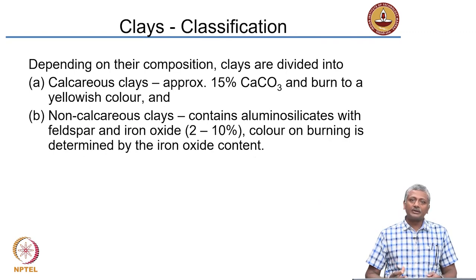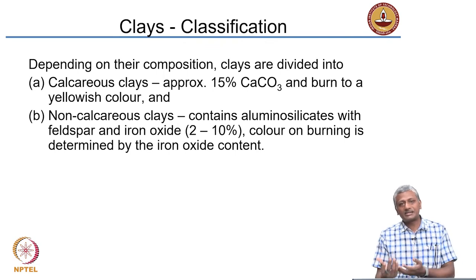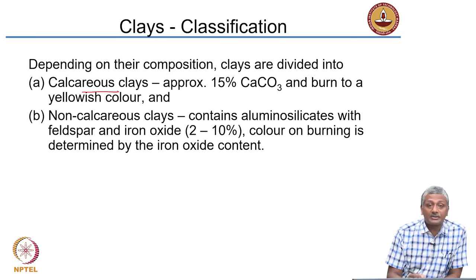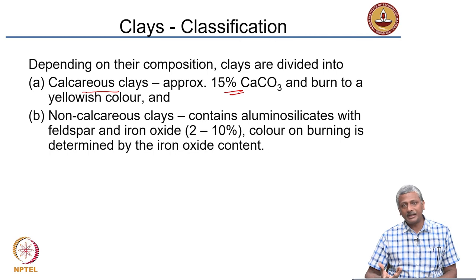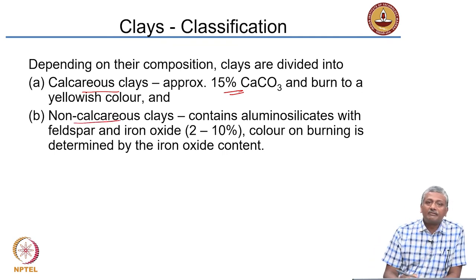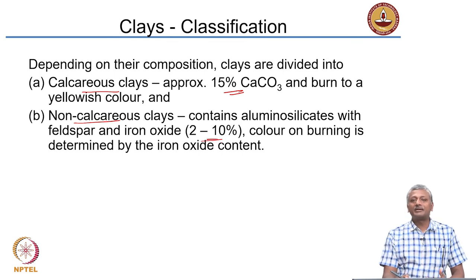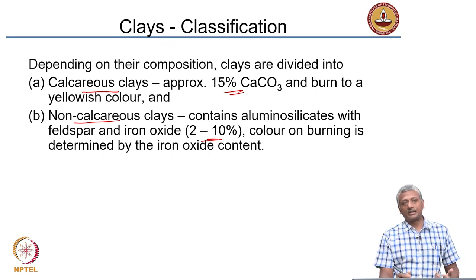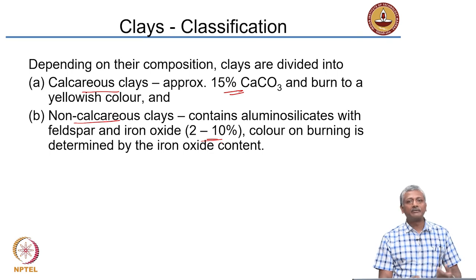Clays used for making bricks are classified depending on their composition. Calcareous clays contain about 15% calcium carbonate — when fired in the kiln at high temperature, they impart a yellowish colour. Non-calcareous clays have very little calcium but a lot of feldspars and iron oxide. This iron oxide imparts a reddish-brown colour after firing. Hematitic materials tend to give reddish and reddish-brown colours, while magnetite gives darker varieties of brown or close to black.